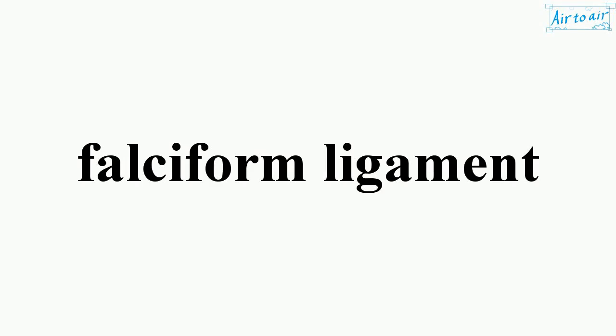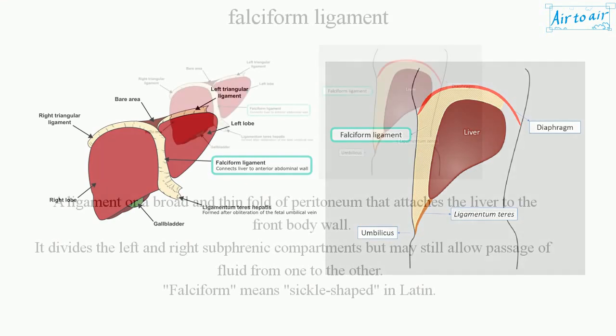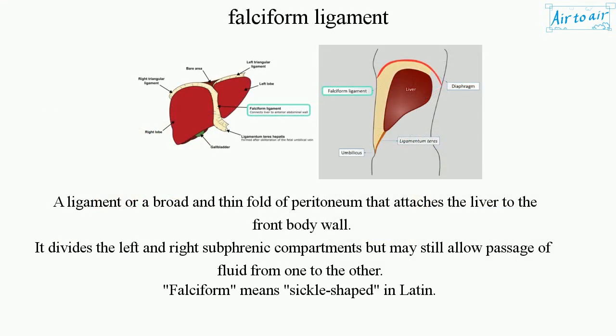Falciform Ligament: a ligament or a broad and thin fold of peritoneum that attaches the liver to the front body wall. It divides the left and right subphrenic compartments but may still allow passage of fluid from one to the other.